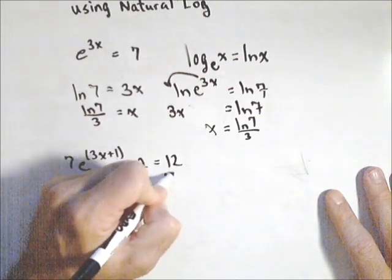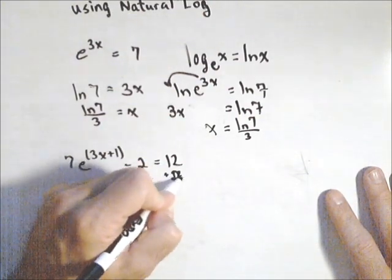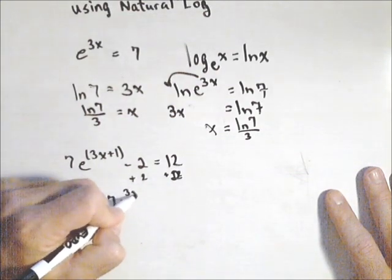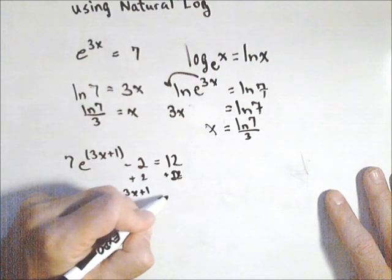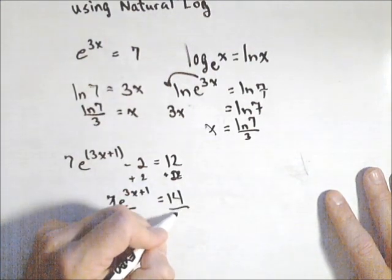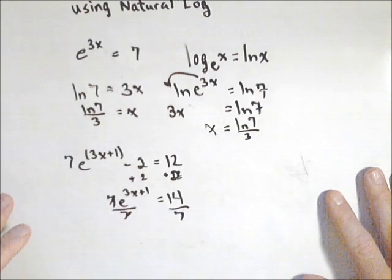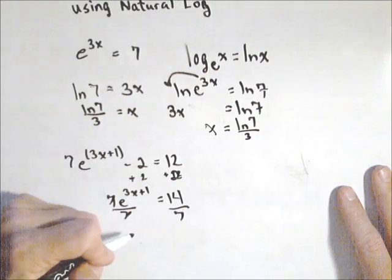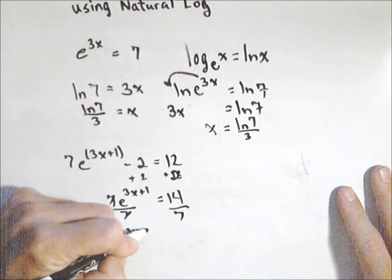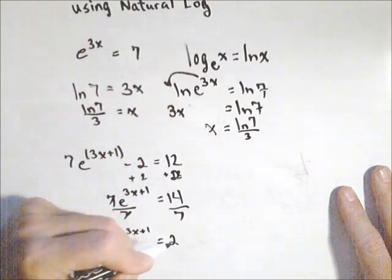So we might go ahead and add the 2 to both sides. So we have 7e to the 3x plus 1 equals 14. Now we're going to divide both sides by 7. So right now we're just using normal equation solving techniques. So we have e to the 3x plus 1 equals 2.